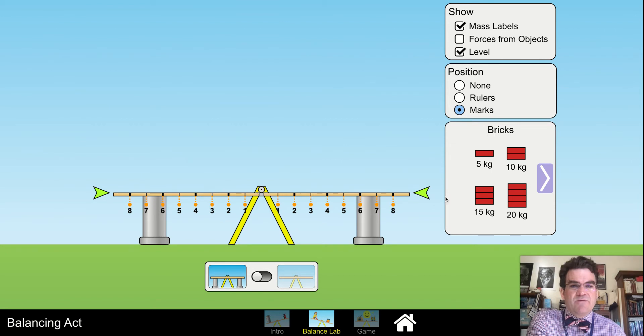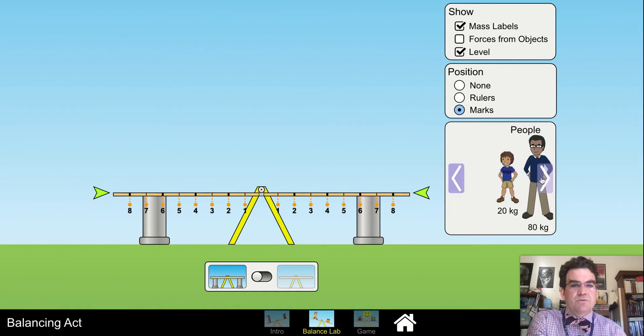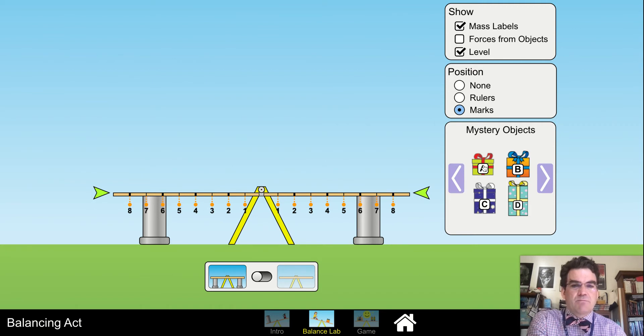Here we've got it set up where we have the level clicked, we have the marks clicked, and so we have bricks to be able to use. We can also use people, but we're trying to find out what is the mass of these mystery objects. I'm going to take Mystery Object A and make it easy on me. I'm going to do it on the 1 to start off with, because then whatever times 1 is going to equal this.